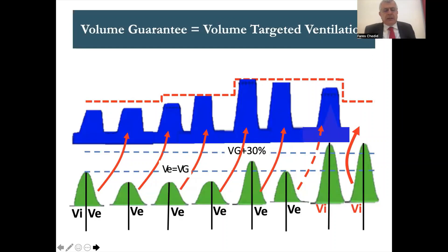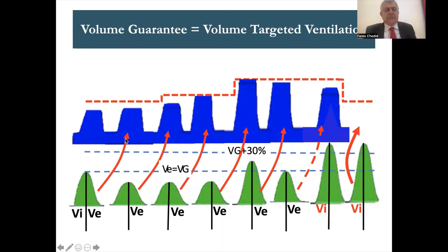What is volume guarantee? It is a pressure control mode where the pressure applied to the patient creates the volume. Now that the volume is created, the expiratory volume of each breath will order the PIP of the next breath. We have a target volume — the VG, volume guarantee, or in some ventilators called volume targeted ventilation.